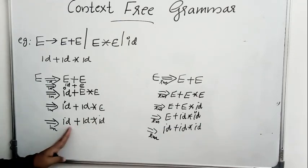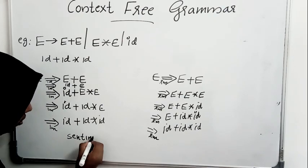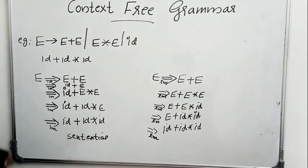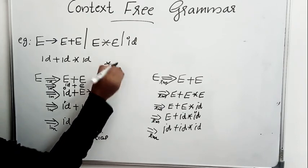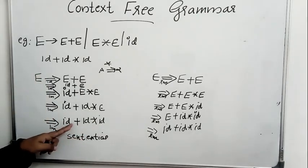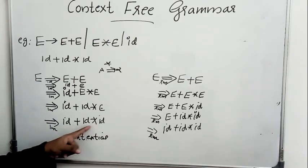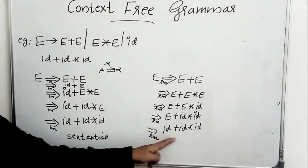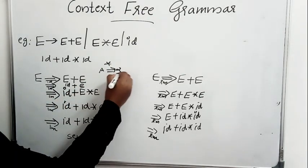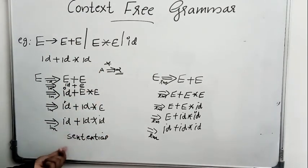The last line does not contain any non-terminal, so it is known as a sentential form of the grammar. A sentential form is the right-hand side string obtained during some derivation. If it was obtained using leftmost derivation, we call it a left sentential form; if using rightmost derivation, a right sentential form. If the sentential form contains only terminals, we can also call it a sentence of the grammar.